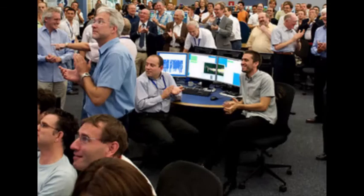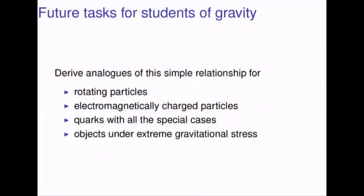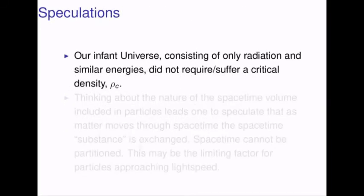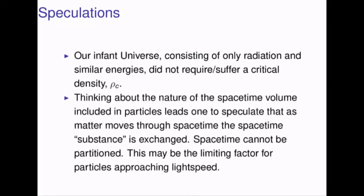Pretty straightforward questions: can one derive analogs of our simple relationship for rotating particles, electromagnetically charged particles, quarks with all the special cases? That would be a real difficult problem. And what about objects under extreme gravitational stress? We offer some speculations. Our infant universe, consisting only of radiation and similar energies like gluons, really did not require or suffer a critical density rho sub c. Finally, thinking about the nature of the spacetime volume included in microscopic particles leads one to speculate that as matter moves through spacetime, the spacetime substance is exchanged. Spacetime cannot be partitioned, and this may be the very limiting factor for particles approaching light speed.